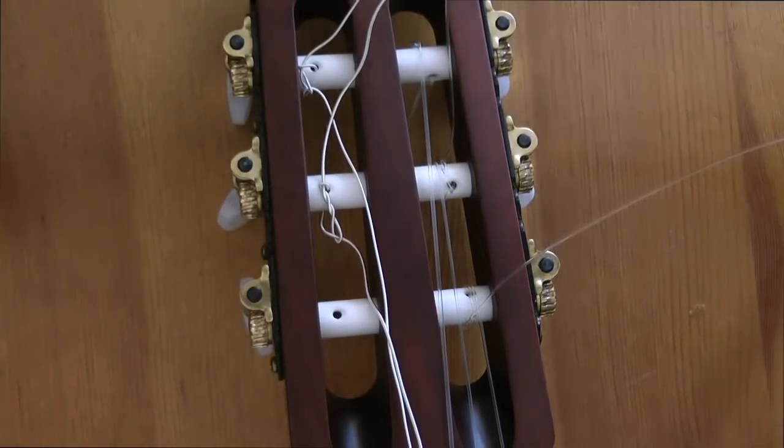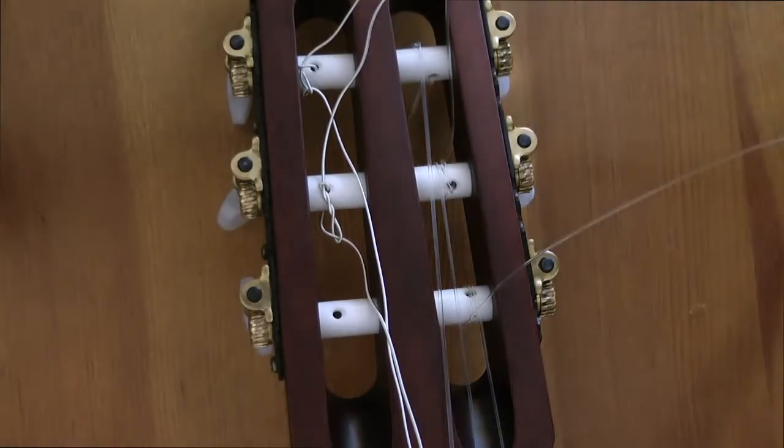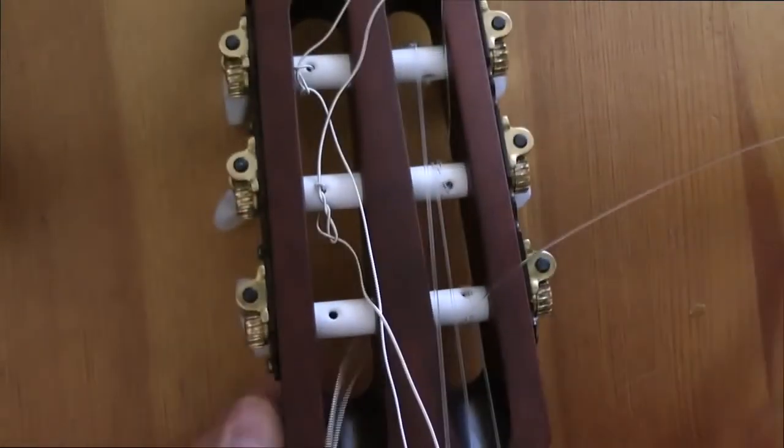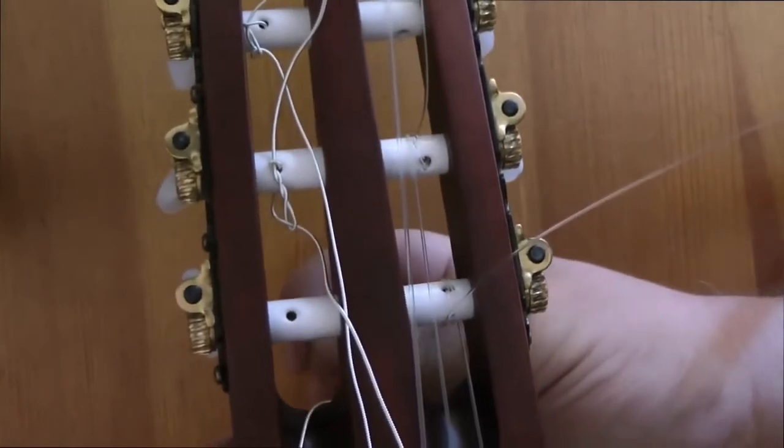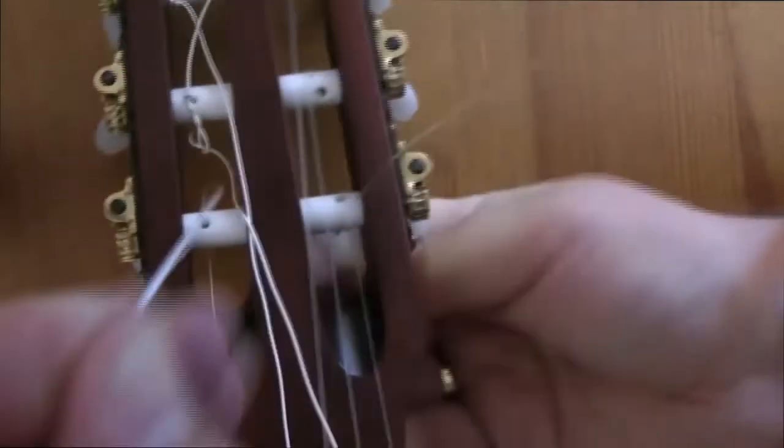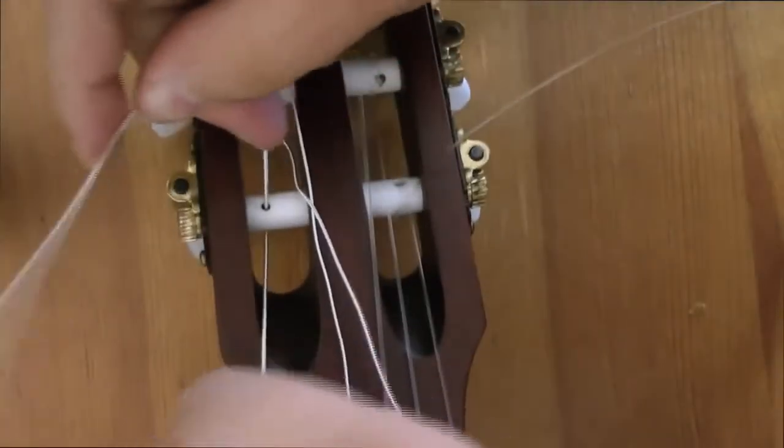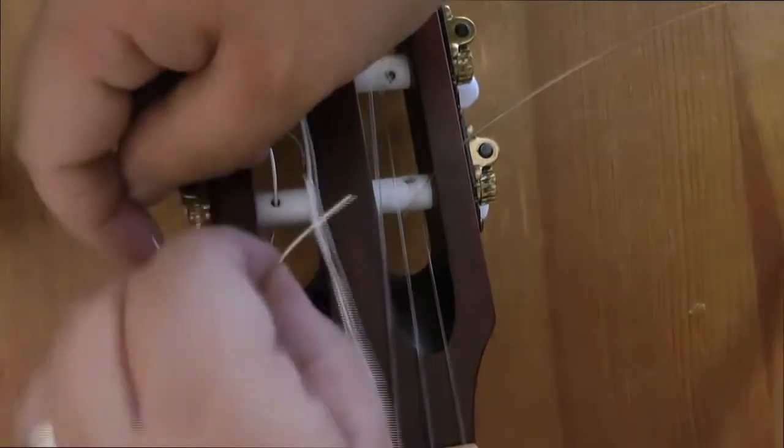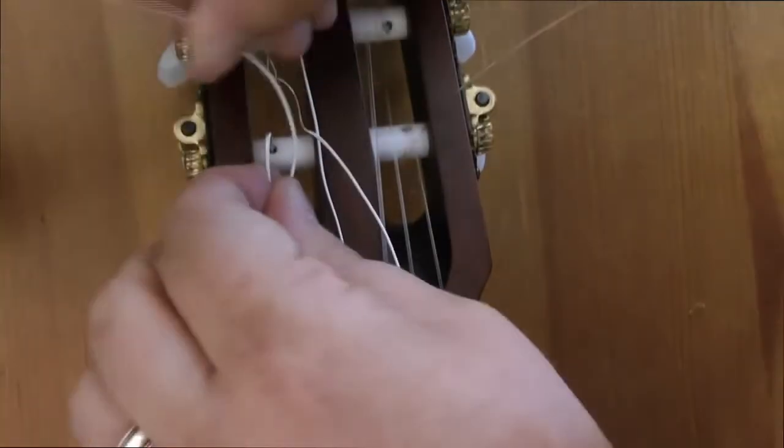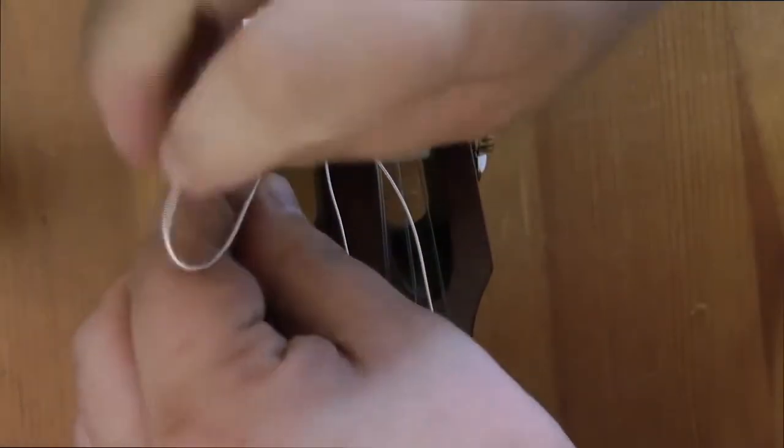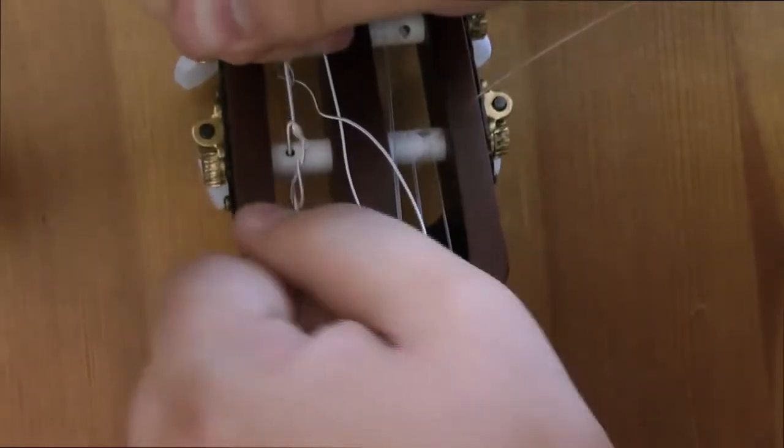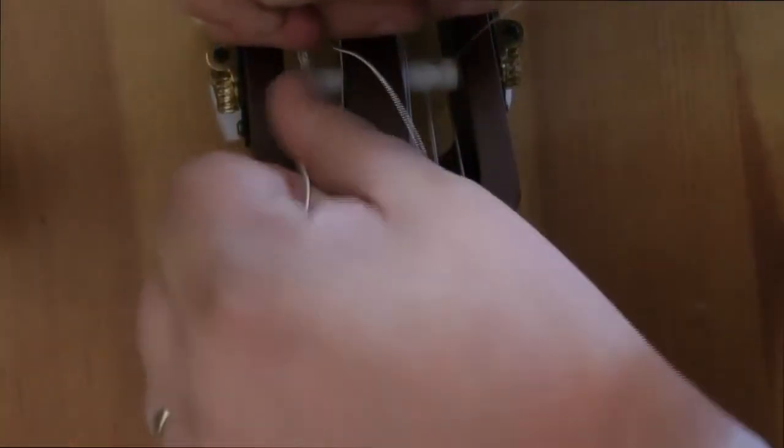Finally we move on to the last string, which is of course the low E string. This is the thickest string of the bunch. So expect me to make another meal of this. And here we go. Through the eye hole. I think I've picked up a bit of speed here. Looks like I may have had a second wind. Make the loop. Thread all the strings through the loop a couple of times to make a knot. One. Two. Yeah, you can see I've got confidence. I'm getting cocky now. And then tighten behind the eye hole. There we go. And that one was done in record time.